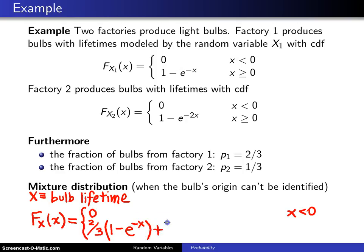And then one third is the probability you'll get one of the bulbs from factory two, which has CDF one minus e to the minus two x. And that will be the cumulative distribution for x greater than or equal to zero.